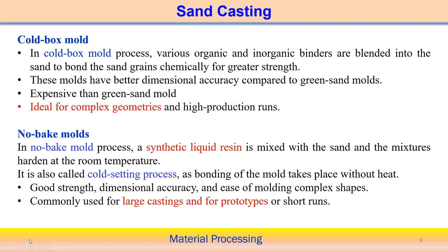In a cold box mold, various organic and inorganic binders are blended into the sand as binding agents, resulting in greater strength and better dimensional accuracy compared to green sand molding. However, using organic and inorganic binders makes it more expensive. It is ideal for more complex structures and high production runs.